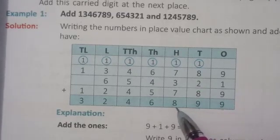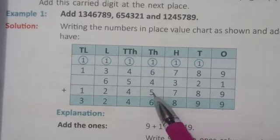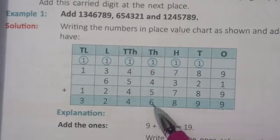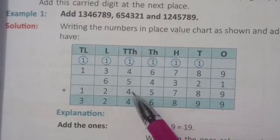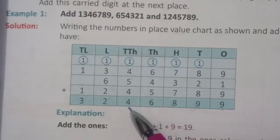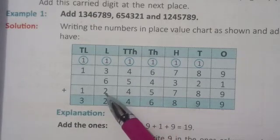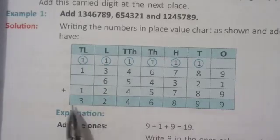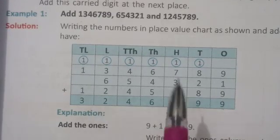At the hundreds place: 7 plus 3 is 10 plus 2 is 12, plus 1 carry is 13 — 8 is placed and 1 is carried. At the thousands place: 6 plus 4 is 10 plus 5 is 15, plus 1 carry is 16 — 6 placed and 1 carry. At the ten-thousands place: 6 plus 4 is 10 plus 5 is 15, plus 1 carry is 16 — 4 placed and 1 carry. At the lakhs place: 3 plus 6 is 9 plus 2 is 11, plus 1 carry is 12.